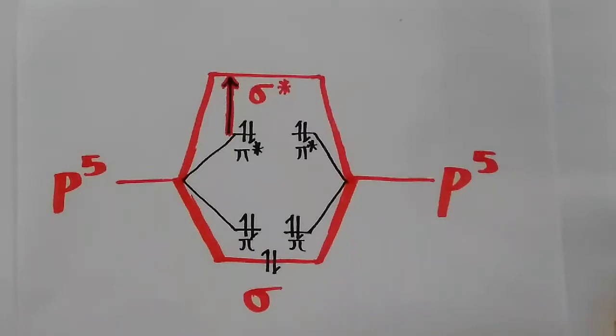Since pi-star is the highest occupied orbital, it becomes the HOMO. And sigma-star becomes the lowest unoccupied molecular orbital.